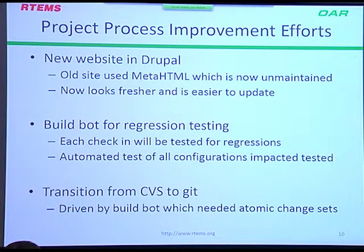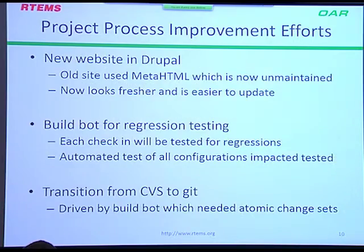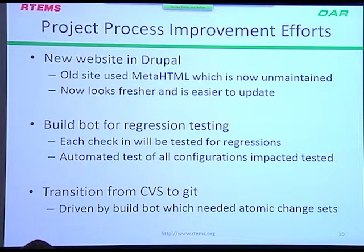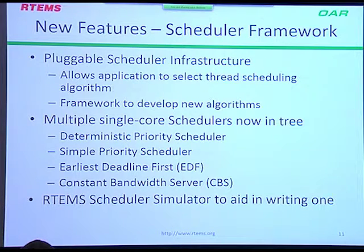We transitioned from CVS to Git, which was very complicated — it was actually easier to do than to retrain all the users who had lots of history. We had 17 years of public history in CVS and we preserved that. This gives us atomic change sets and also makes it easier for you to track RTEMS and merge your own changes independently, because you usually have custom BSPs and custom drivers that you're not going to submit — nobody else is interested in your FPGA.